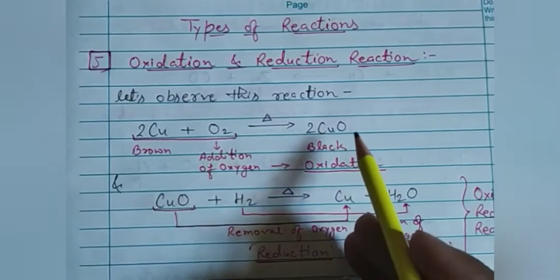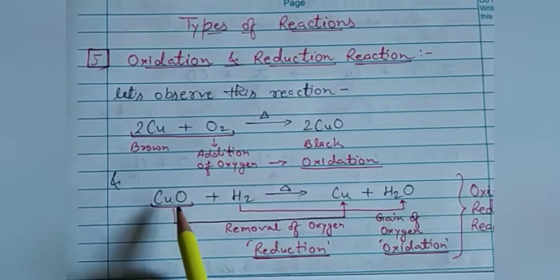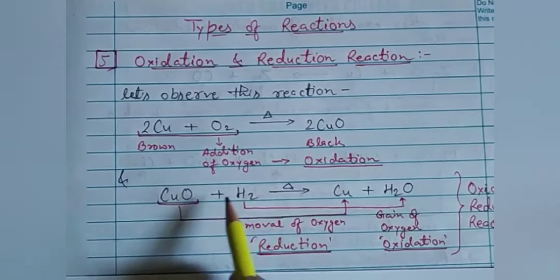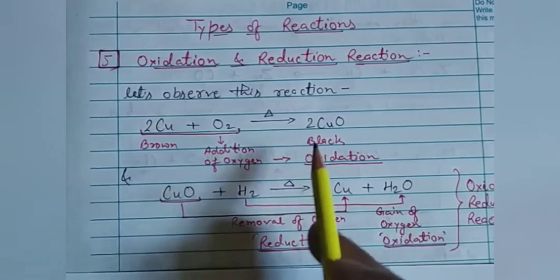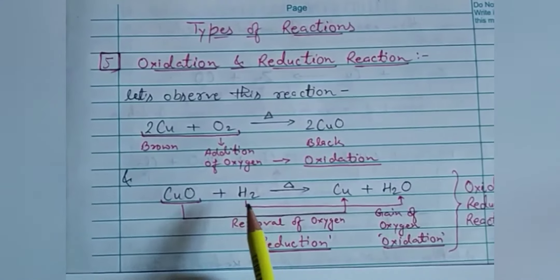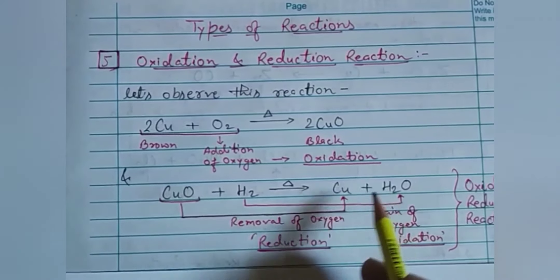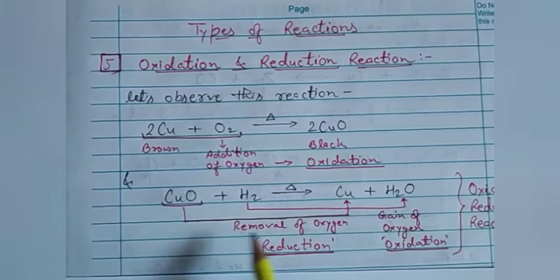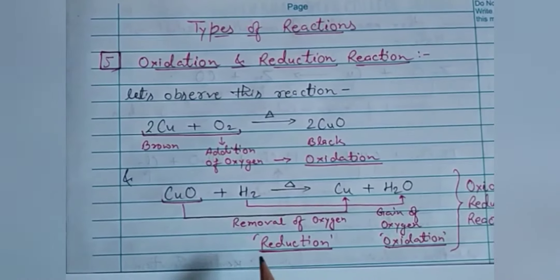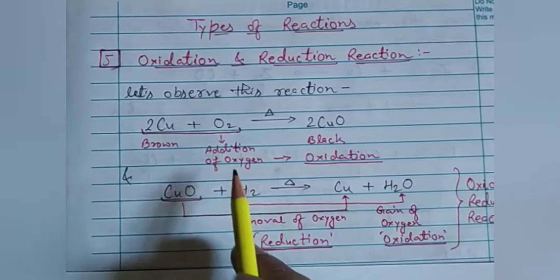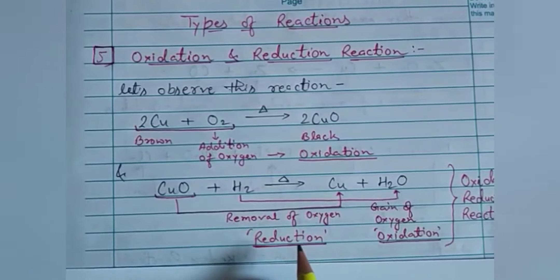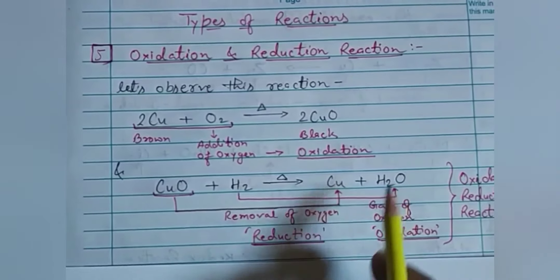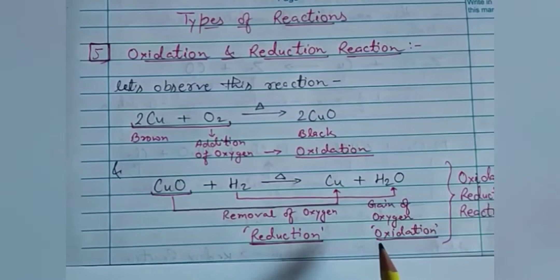If we continue with the copper oxide obtained and blow hydrogen gas over it while it is heated, the hydrogen removes the oxygen from the copper oxide and we get back the brown copper metal. This removal of oxygen is called reduction, while addition of oxygen is called oxidation. Here hydrogen is gaining the oxygen, so that is also oxidation.